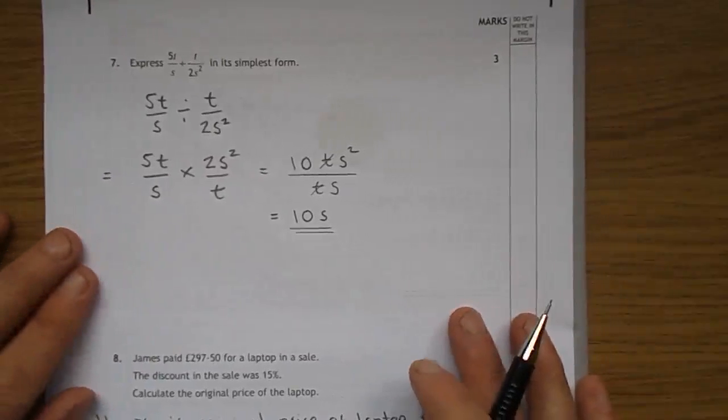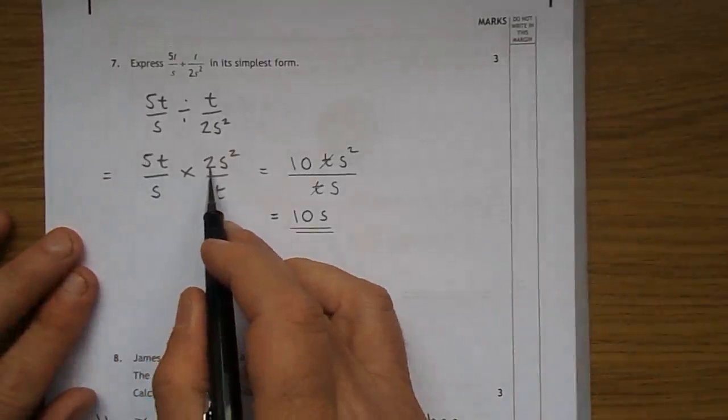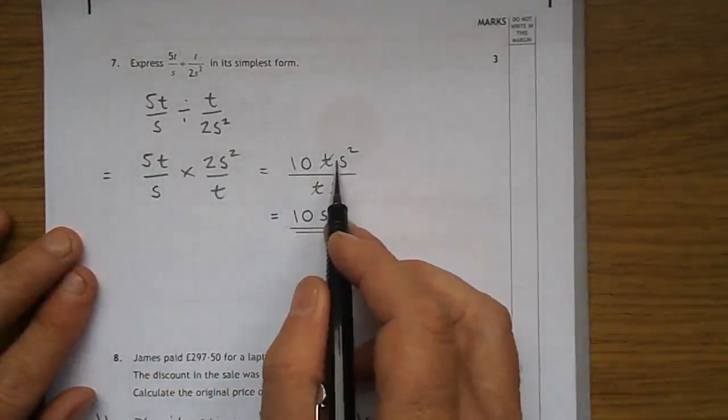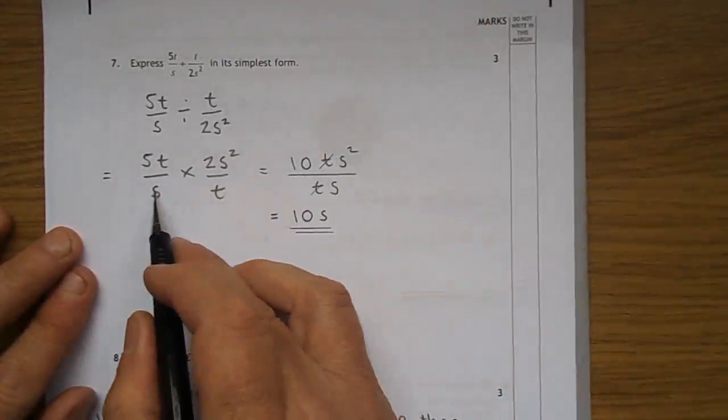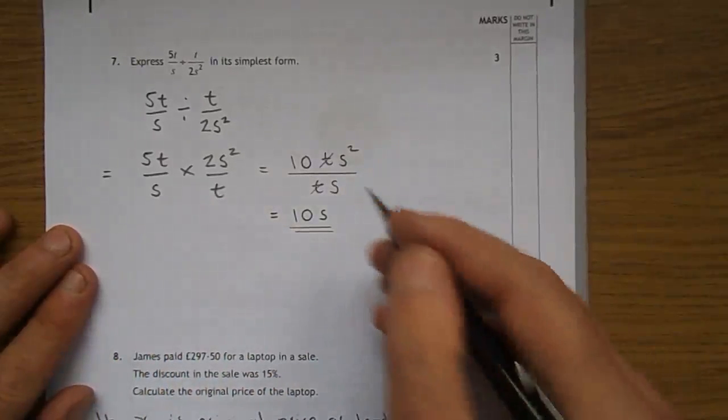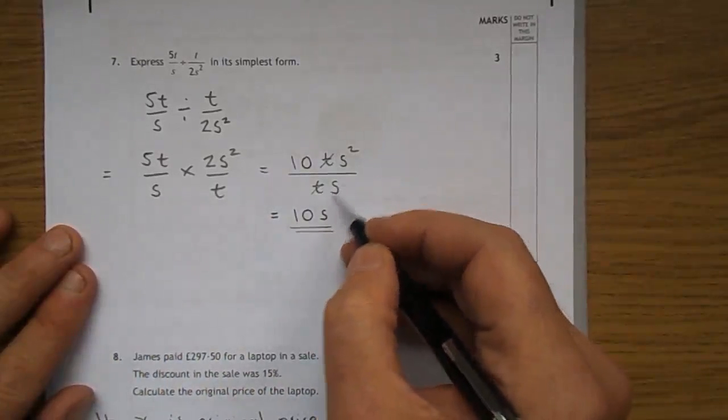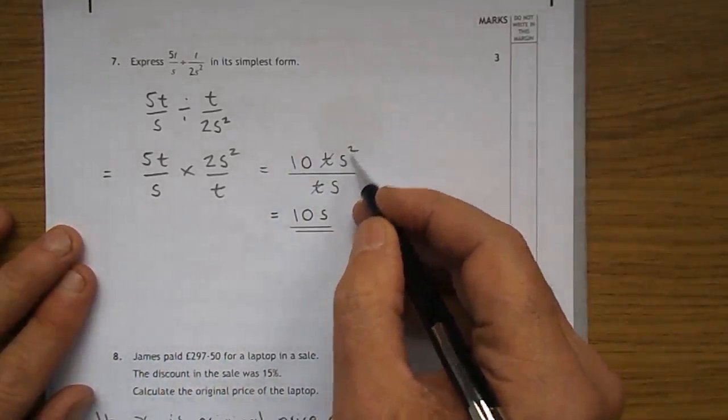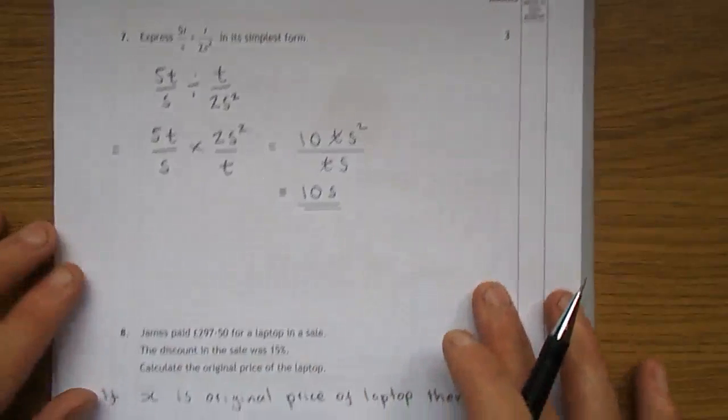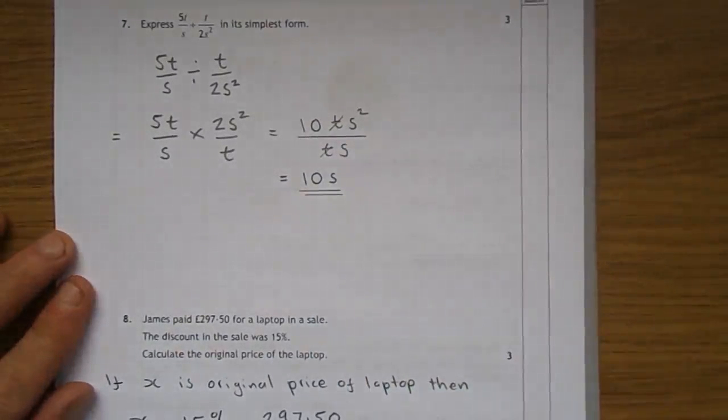Now, I've kind of laboured this a little bit. 5 times 2 gives 10. t times s squared. And down at the bottom, you've got s times t. T's cancel, and that s cancels out with one of the s's up there. S squared is just s times s. So, you actually end up with just 10s.